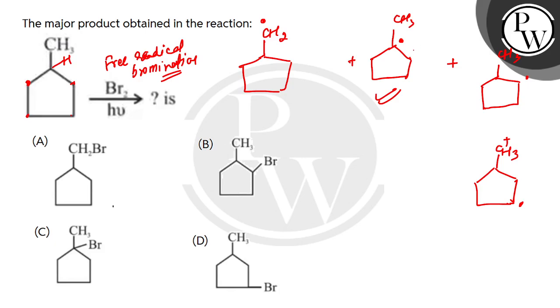This tertiary radical is most stable because of the inductive effect and the hyperconjugation. So what will become our major product? CH3 and Br. I hope you understood, thank you.